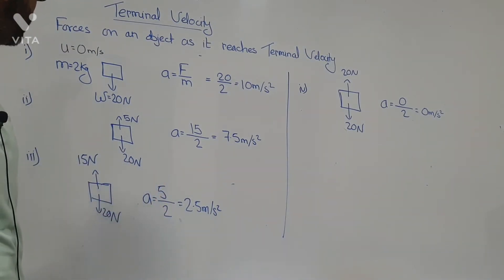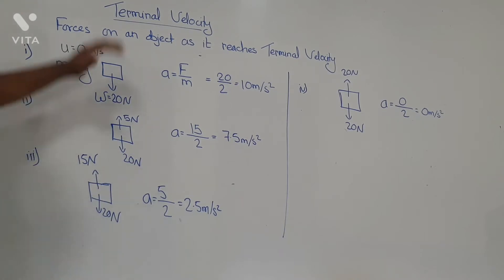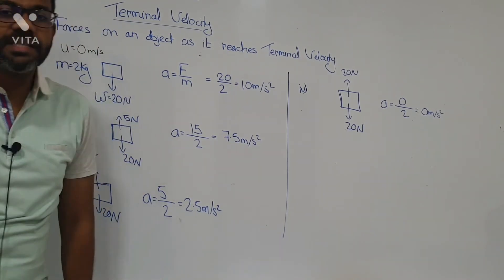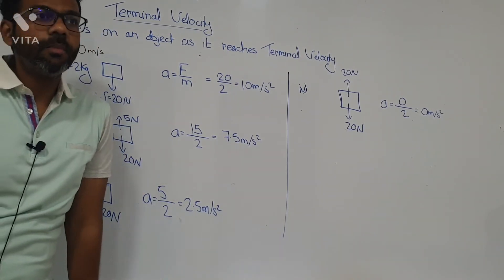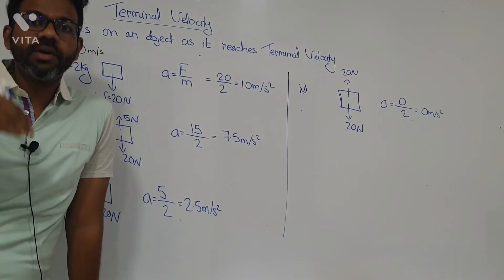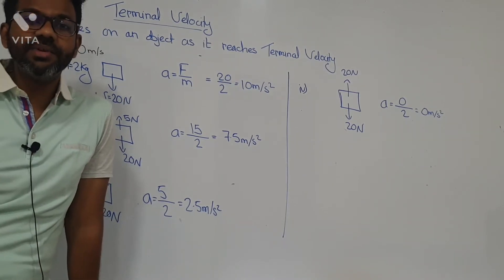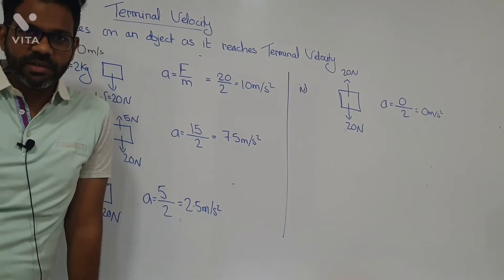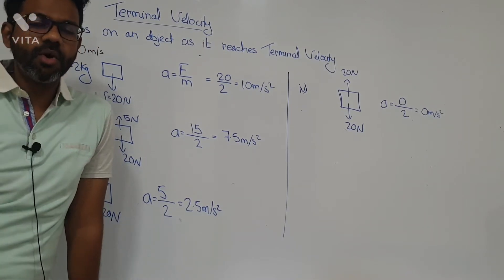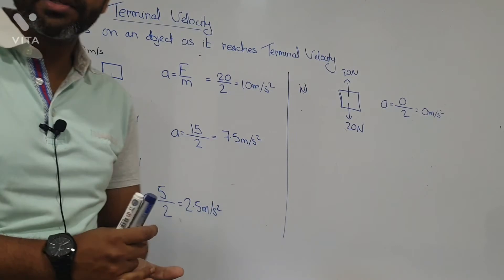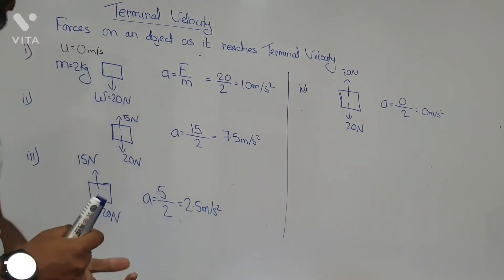When we say an object has reached terminal velocity, we basically mean the object has reached a constant velocity — its velocity is not increasing any further, neither is it decreasing. It has reached a constant level.